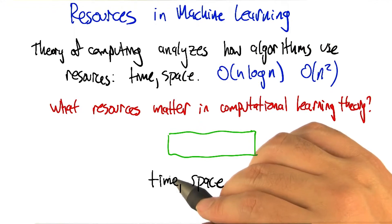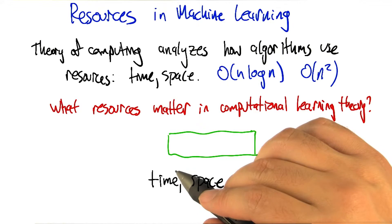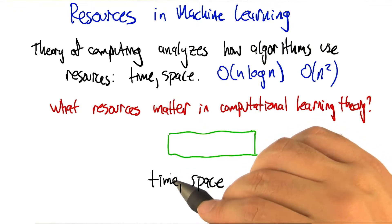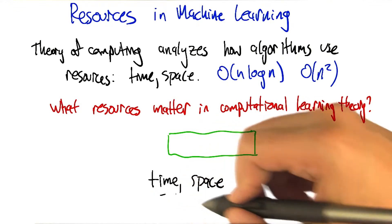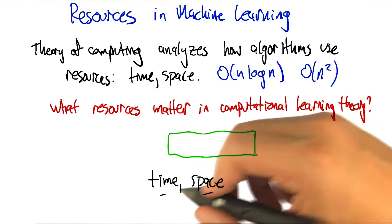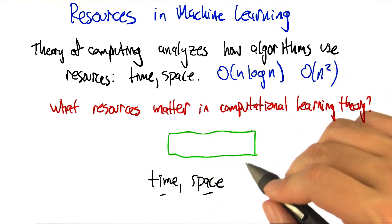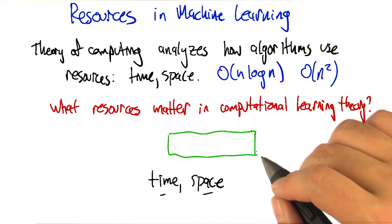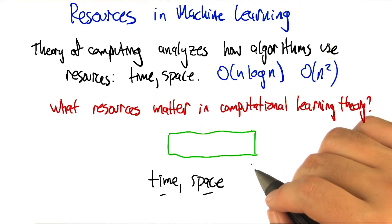Or in particular, if we define a learning problem and we say, well, we can do this computation but it's NP-hard, then maybe that's a problematic way of defining the problem. So yeah, time definitely matters, space for the same reason. And those are the same things that are relevant in regular algorithms. What about anything specific to the machine learning setting?